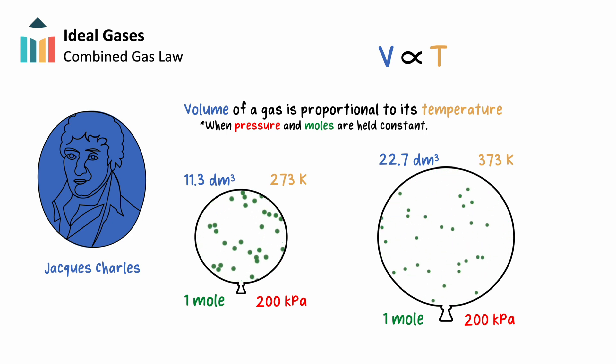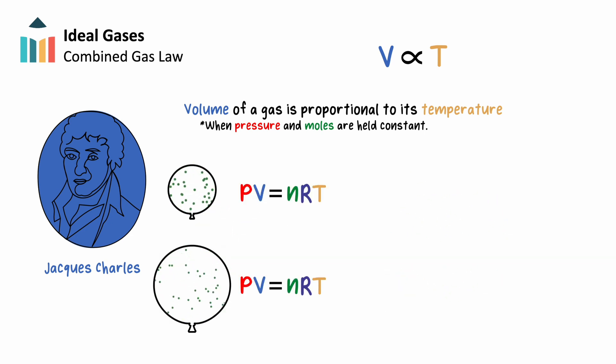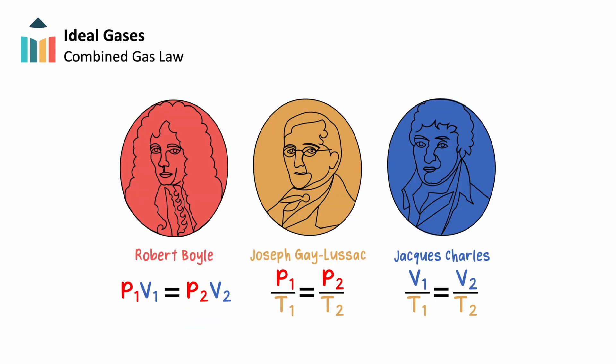We can again derive the equation for this relationship using the ideal gas law. This time, volume and temperature are the changing variables, and if we solve for these variables, we find that they are both equal to our constants nR over P, showing that V1 over T1 and V2 over T2 must be equal to each other. This defines our relationship between changing volume and temperature as outlined in Charles's law.